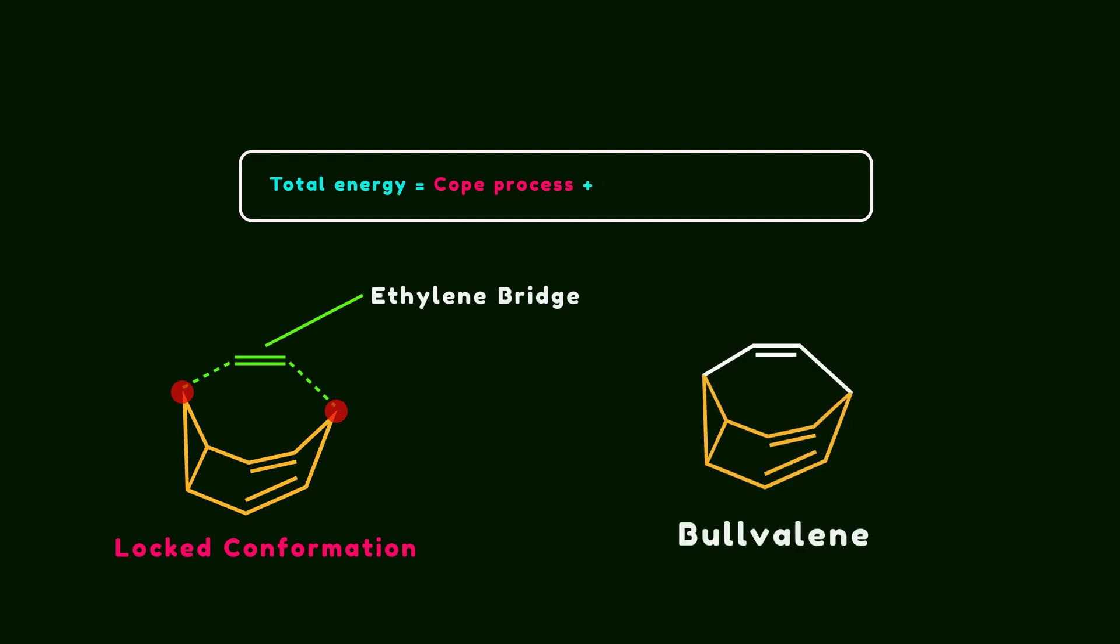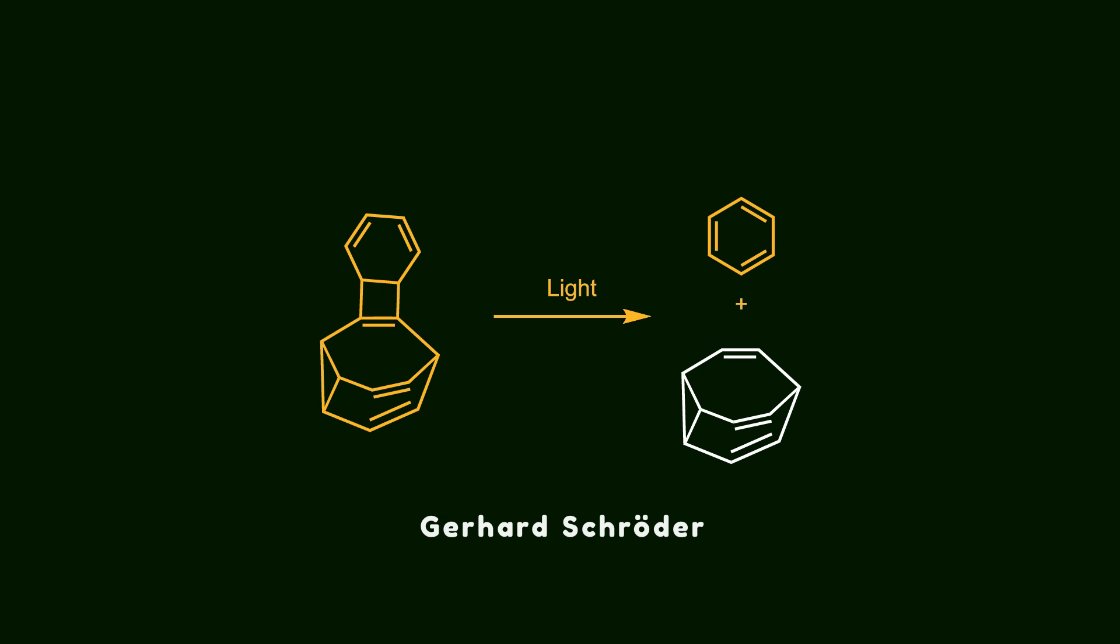At the time, the existence of this molecule was merely a concept. However, within a year, Gerhard Schröder announced the formation of Bullvalene through the photolysis of the dimer of cyclooctatetraene.